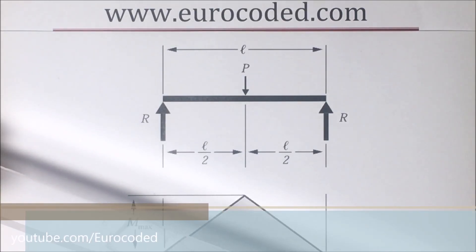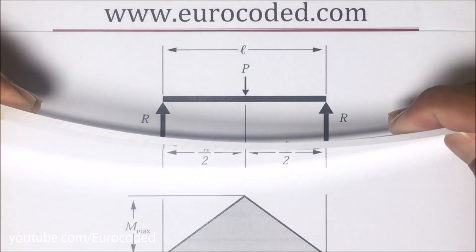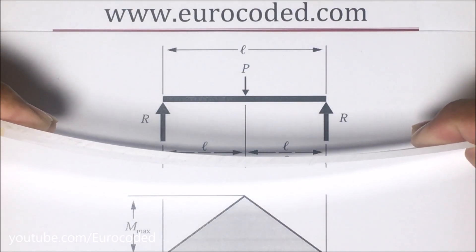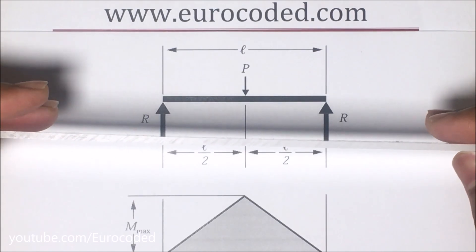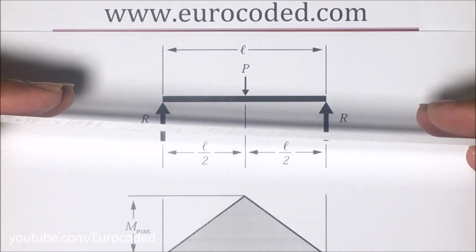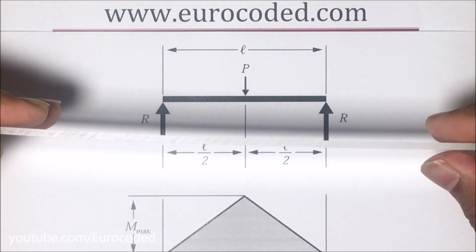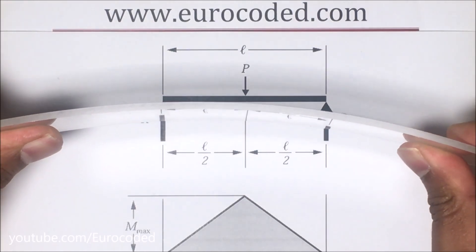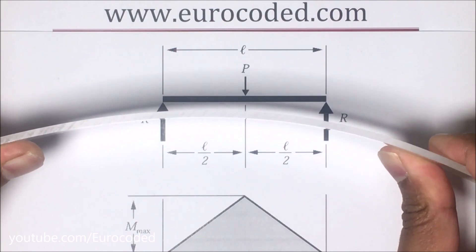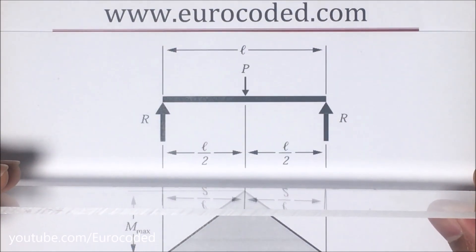Today we are going to look at sagging bending moments and hogging bending moments. If we look at the deflected shape of a structural element, in simple words, a sagging bending moment results in a downward curve, and a hogging bending moment results in an upward curve. Now let's look at stresses in each situation.